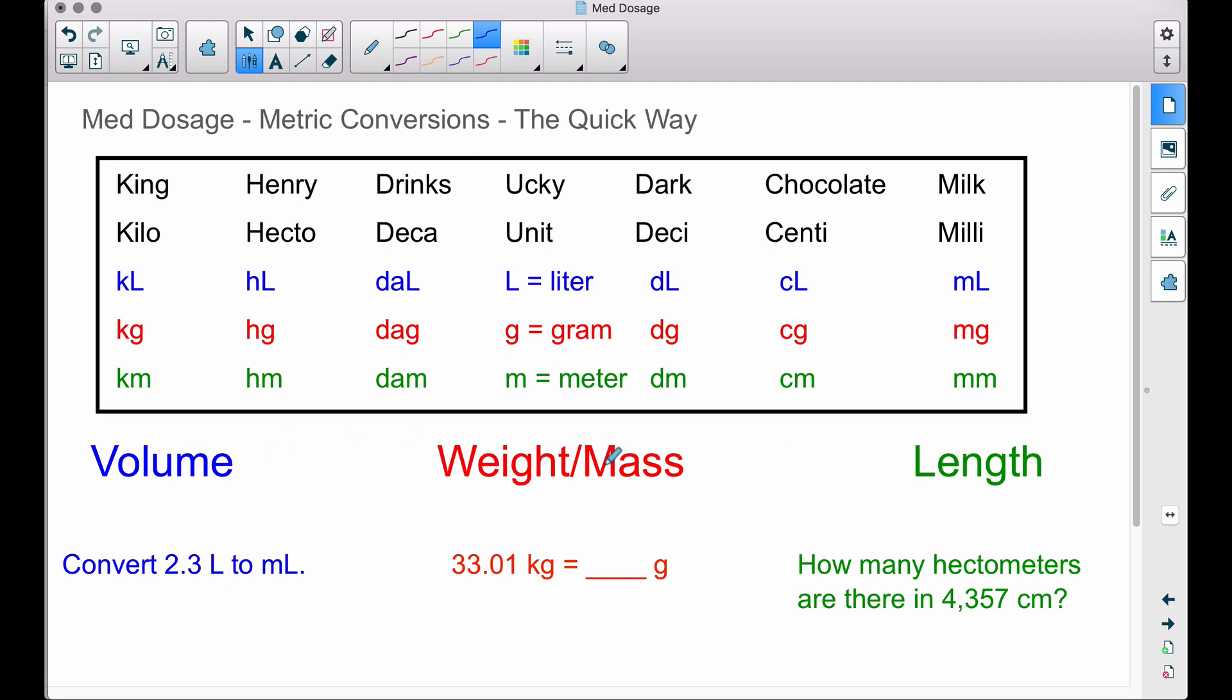However, when we use the word kilo we can say kiloliter, kilogram, kilometer. Same thing for all of these up here. For example, centi: centiliter, centigram, centimeter. And the reason why this thing is King Henry Drinks Ucky Dark Chocolate Milk—you see how the words are matching up or the letters in each word.